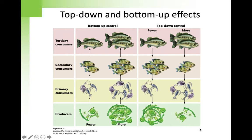Communities demonstrate what we call either top-down or bottom-up control, where energy flow moves either from the producers at the base up, or if energy is controlled from the top trophic levels down, we call that top-down control. We're going to talk more about this in just a minute.